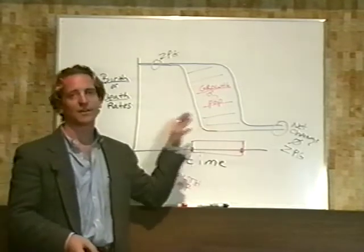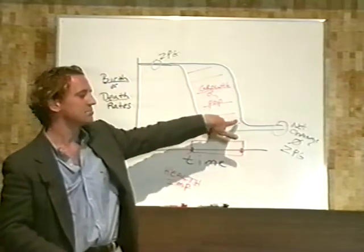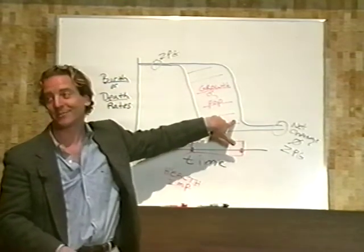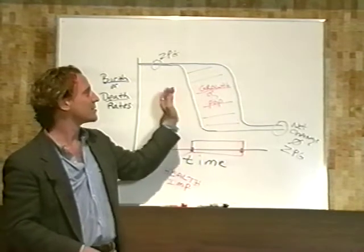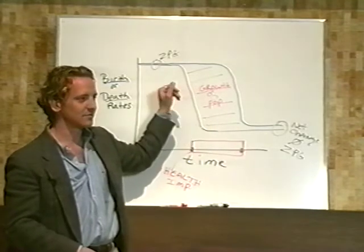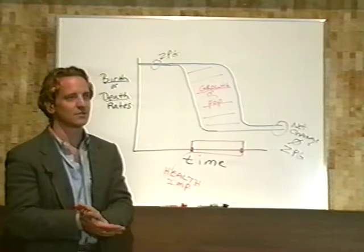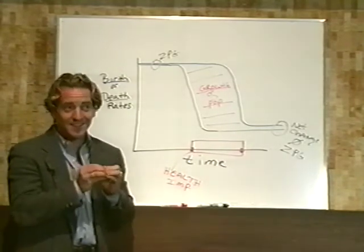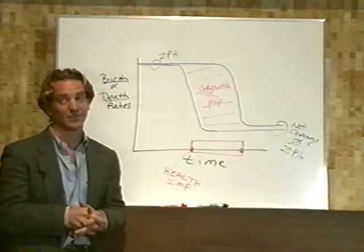So this is what we call the demographic trap in ecological terms. The only way to avoid it is to bring the societal issues as quickly as possible to match changes in health. With a smaller population, it is easier to do, but when the population is very large, it is very difficult to do.